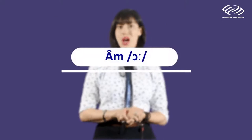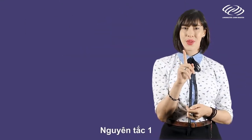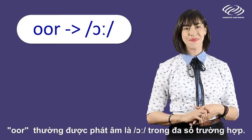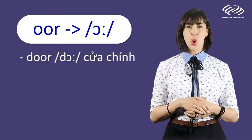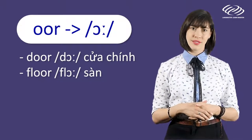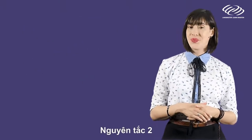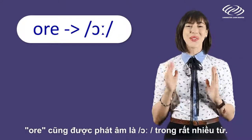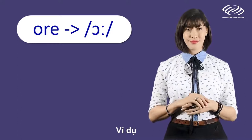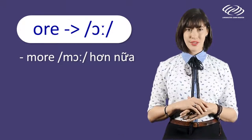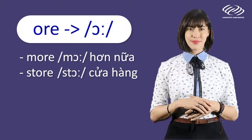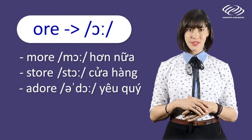The AH sound. Number one: O-R is often pronounced as OR in most cases. For example: door, floor. Number two: Similarly, O-R-E is also often pronounced as OR in many words. For example: more, store, adore.